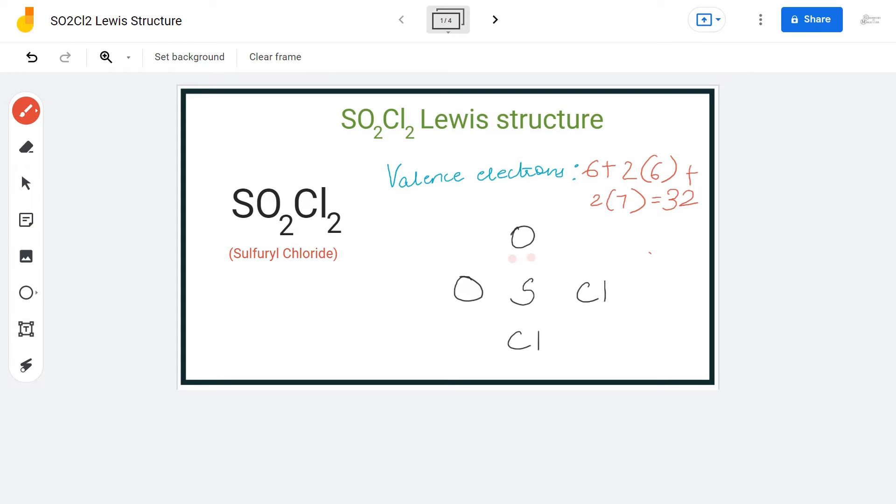Doing that, we will be using up eight out of 32 valence electrons, and we are now left with 24 more valence electrons. If you look here closely, each atom besides sulfur atom requires six valence electrons to have a complete octet.